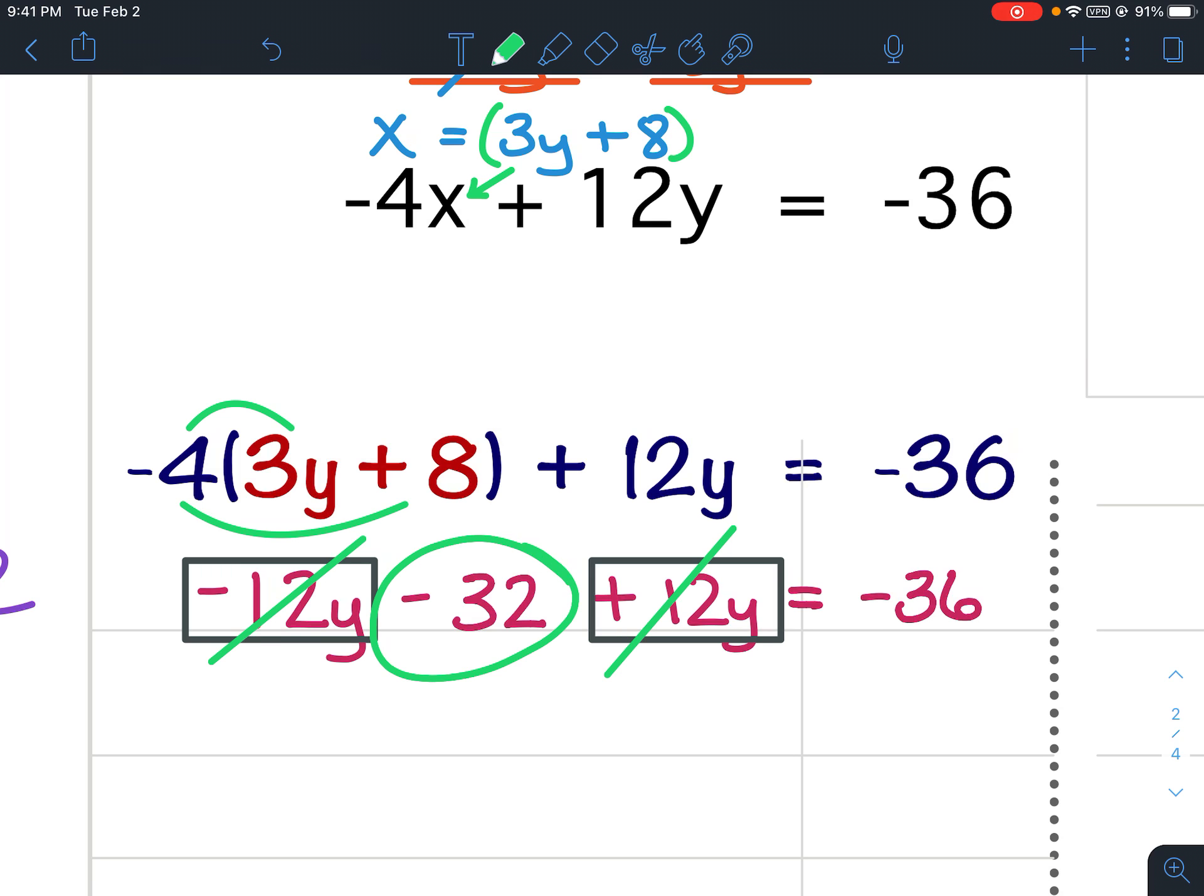Leaving negative 32 on the left and negative 36 on the right. So bring down negative 32. Bring down negative 36.